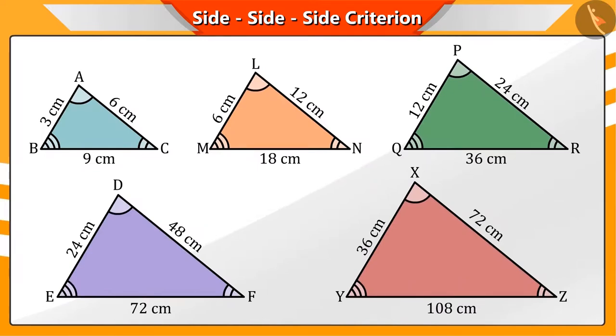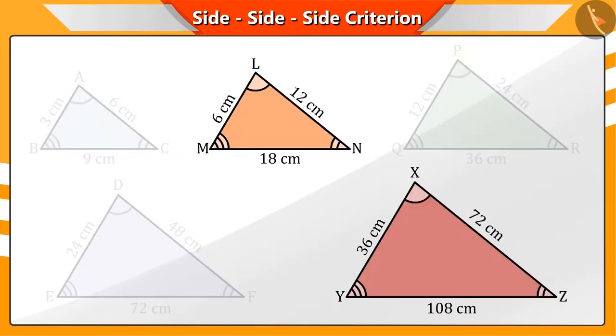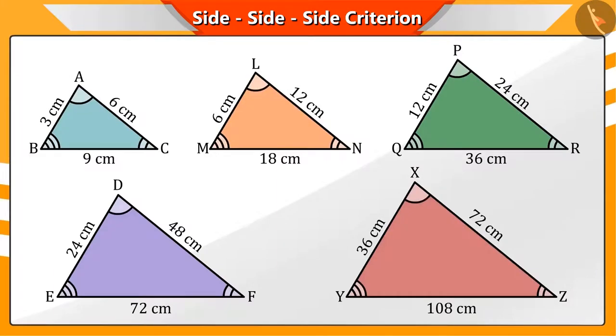Similarly, if we take any two triangles from these then, the ratios of their corresponding sides and the corresponding angles are equal.